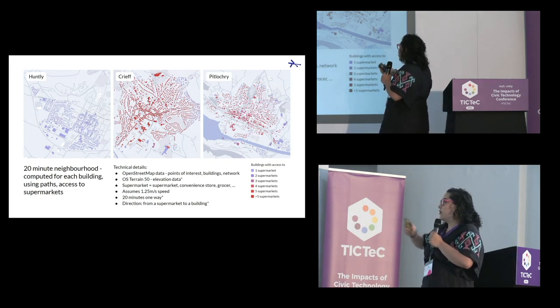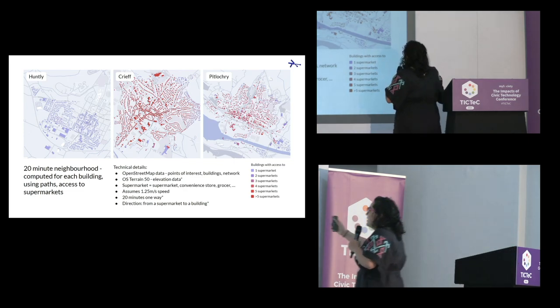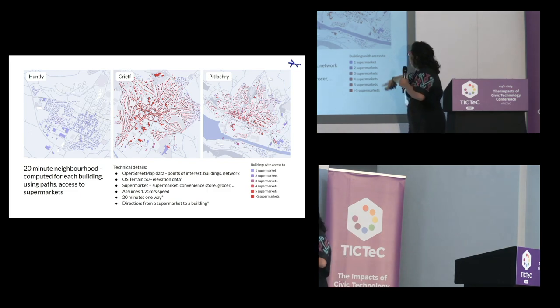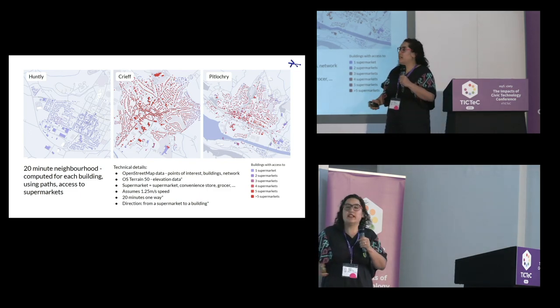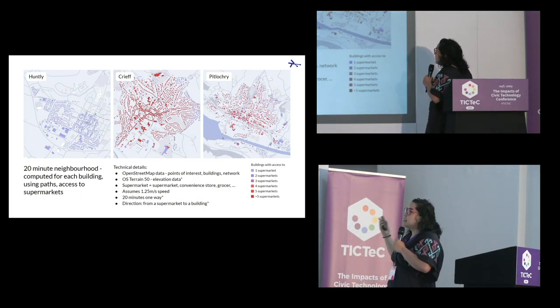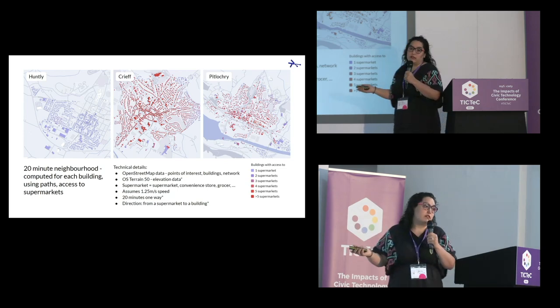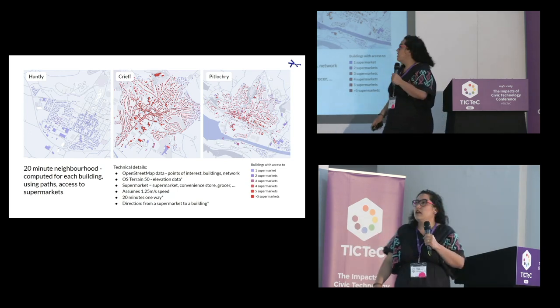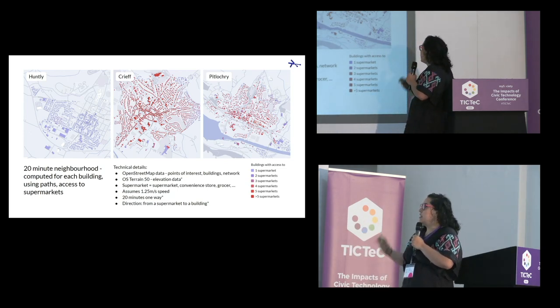These are three towns. The redder you get, it means you have access to more supermarkets; the bluer you get, less; and if it's white, it means none. You can already start seeing some distinct patterns.